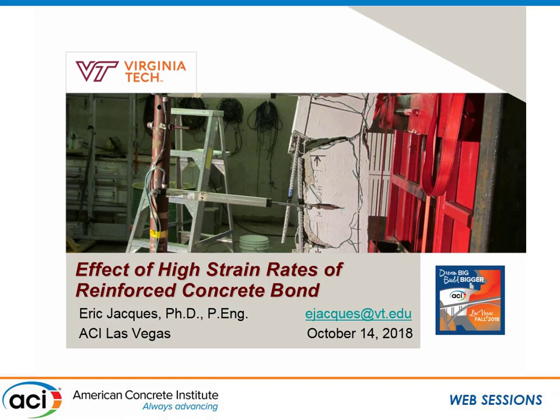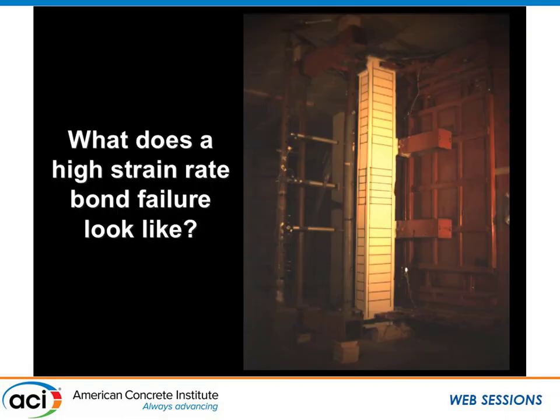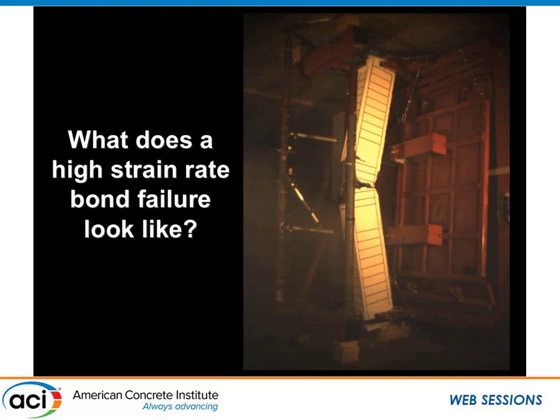Thanks, Thomas. I'm here to talk about reinforced concrete bond under high strain rates. A good way to preface this is to ask the question: what does high strain rate bond failure look like in a real structure? Bond is essential for ensuring composite action between steel and concrete. If we lose that — such as what might happen in a simulated explosion — we have concrete and steel reacting entirely separate from each other. We want to make sure we design our structures properly to ensure something like this doesn't happen.